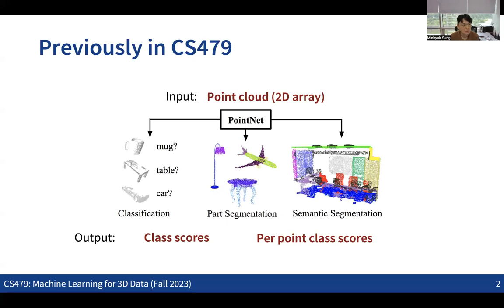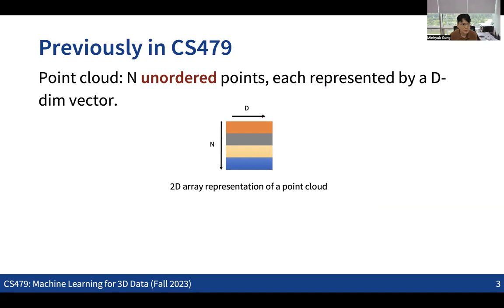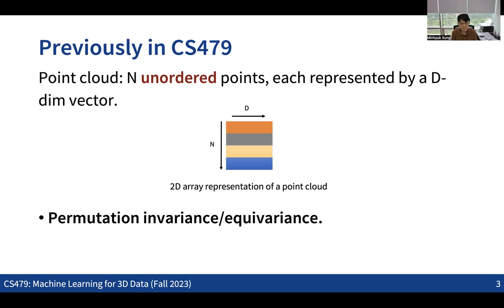As the first neural network, we discussed PointNet, which takes a point cloud as input. This architecture can be applied to multiple applications — not only classification but also per-point tasks like part segmentation and semantic segmentation. The main question was: given a point cloud, which is a set of points where the index order has no meaning, how do we make a neural network that is permutation invariant for global tasks and permutation equivariant for per-point tasks?